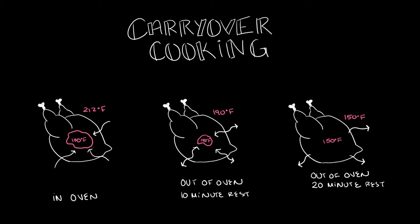When the chicken is in the oven, the temperature of the outer shell is much higher than the inner parts. Even when the heat source is removed, the temperature difference still exists.